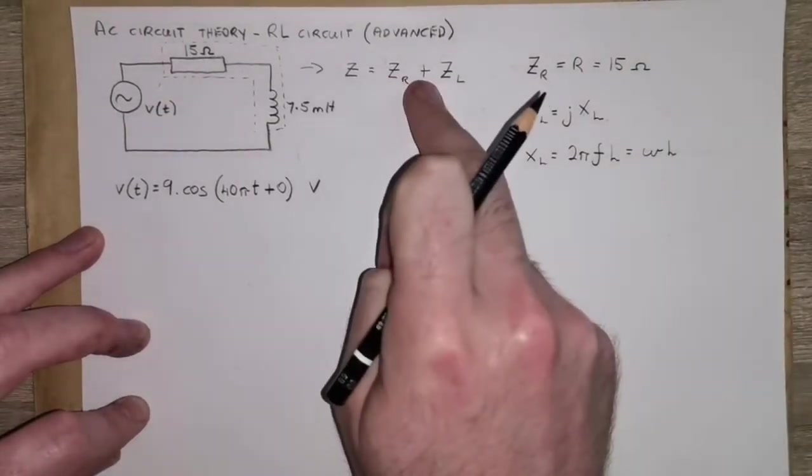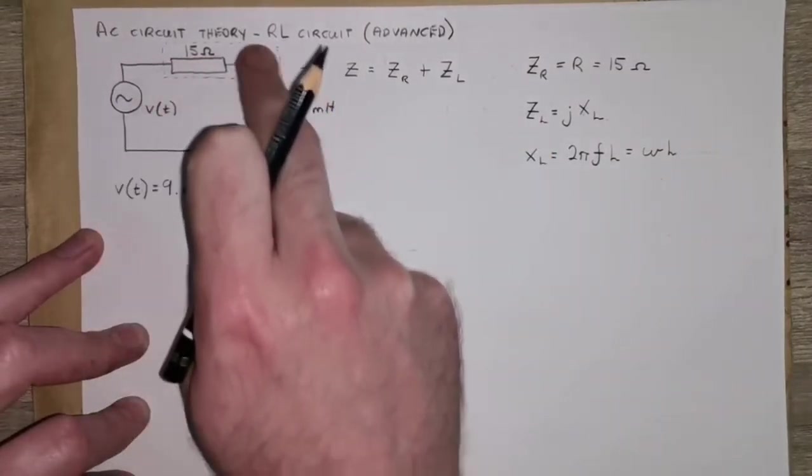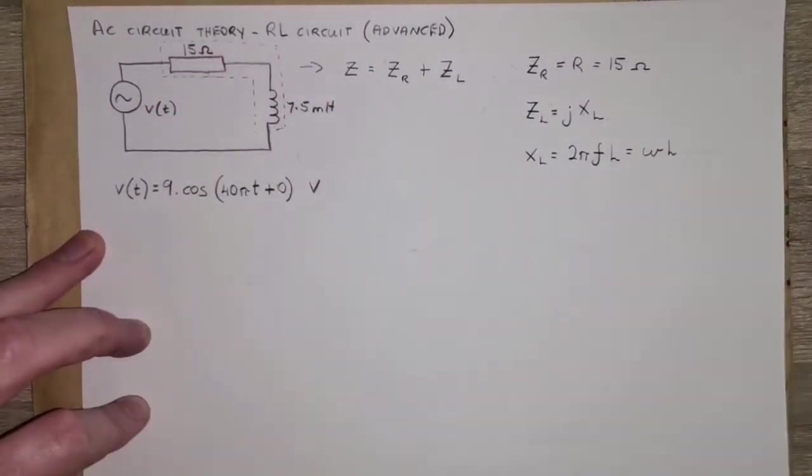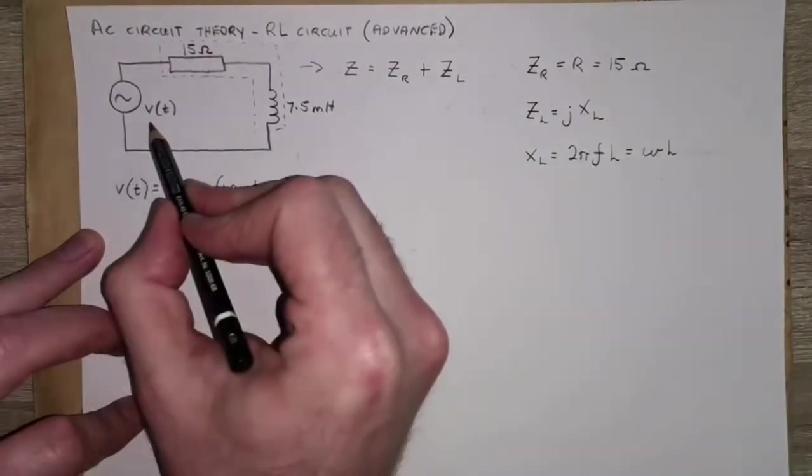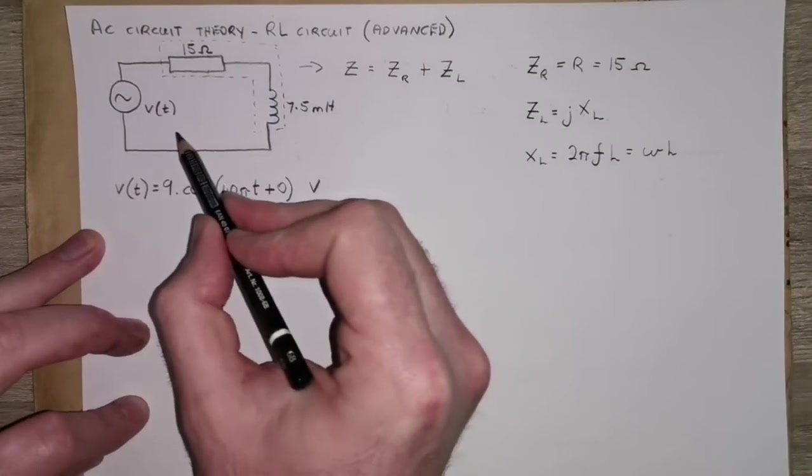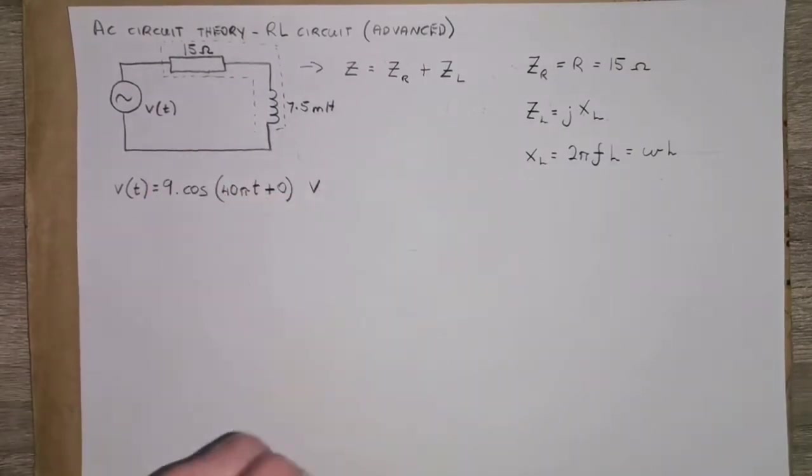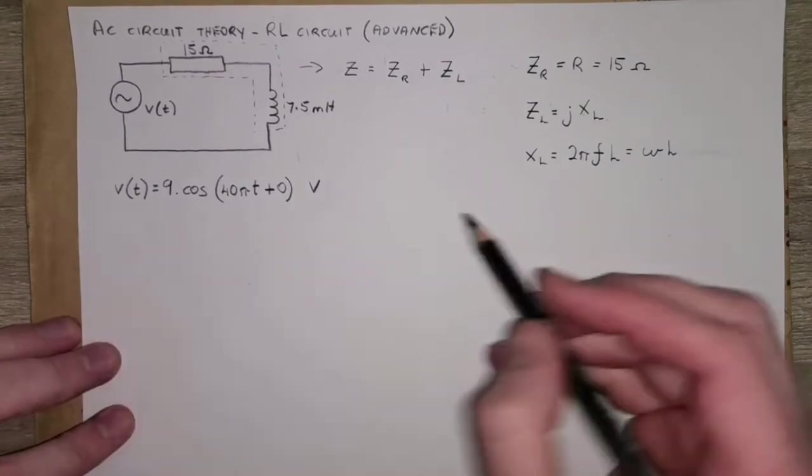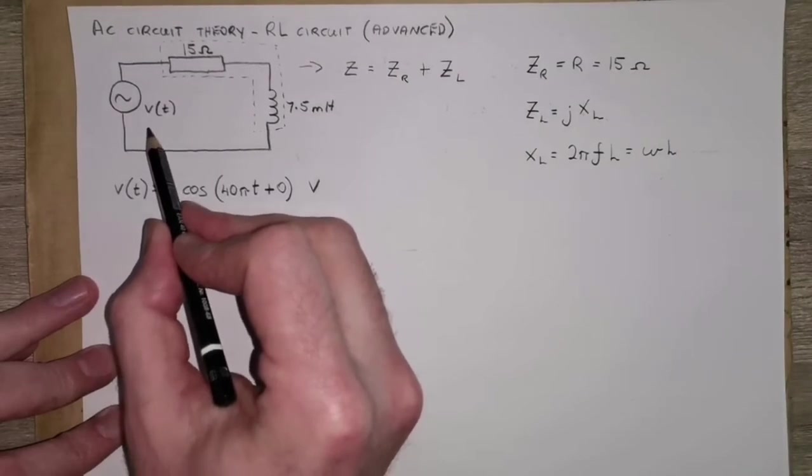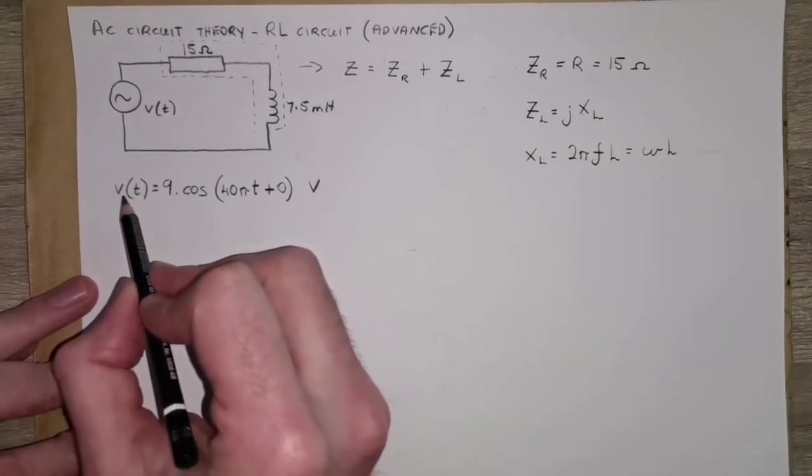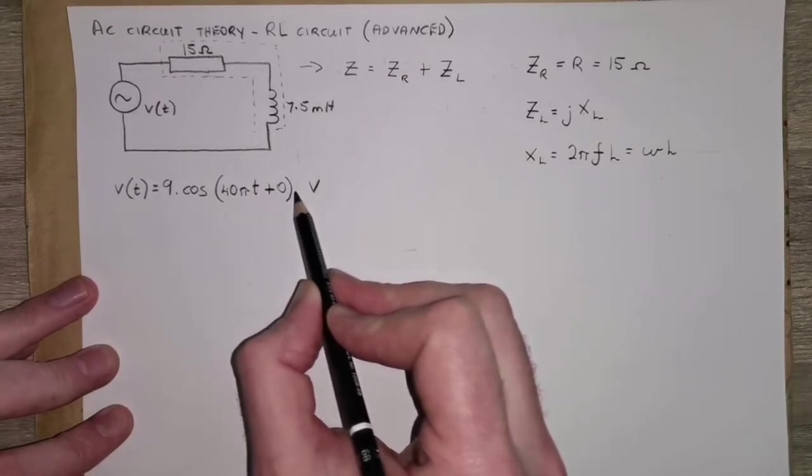So if we want to work out either the resistive or the reactive part of this overall impedance, we do it the same way as before, except in previous questions we were given the value of frequency. But it's slightly different in this question, because we're not given the frequency as we usually expect it, but we actually get it in the form of this sine wave formula.